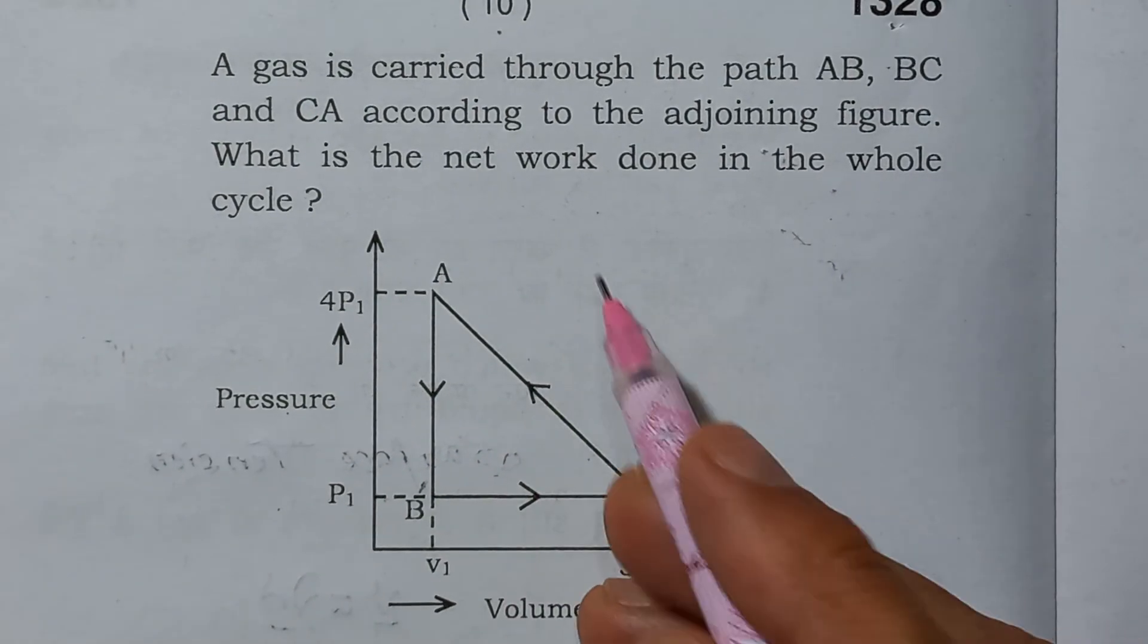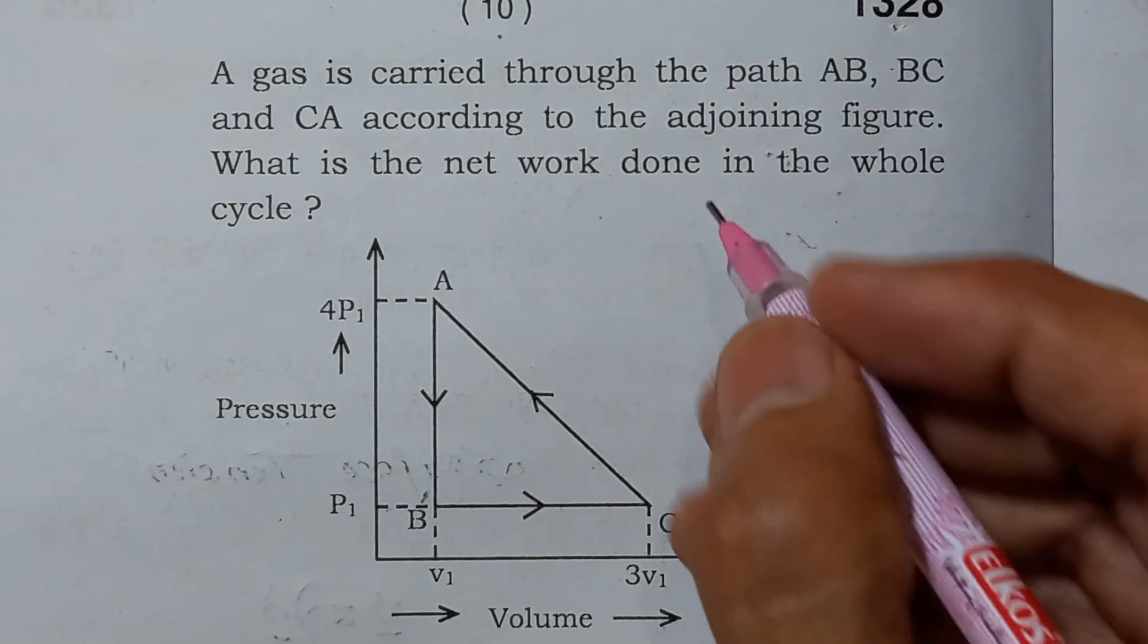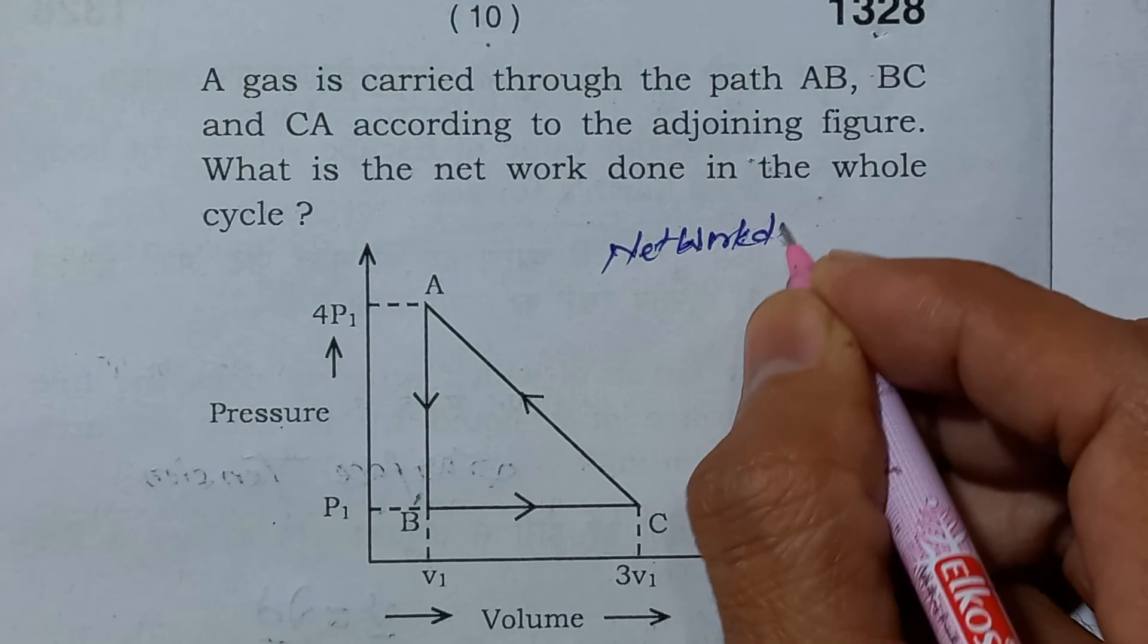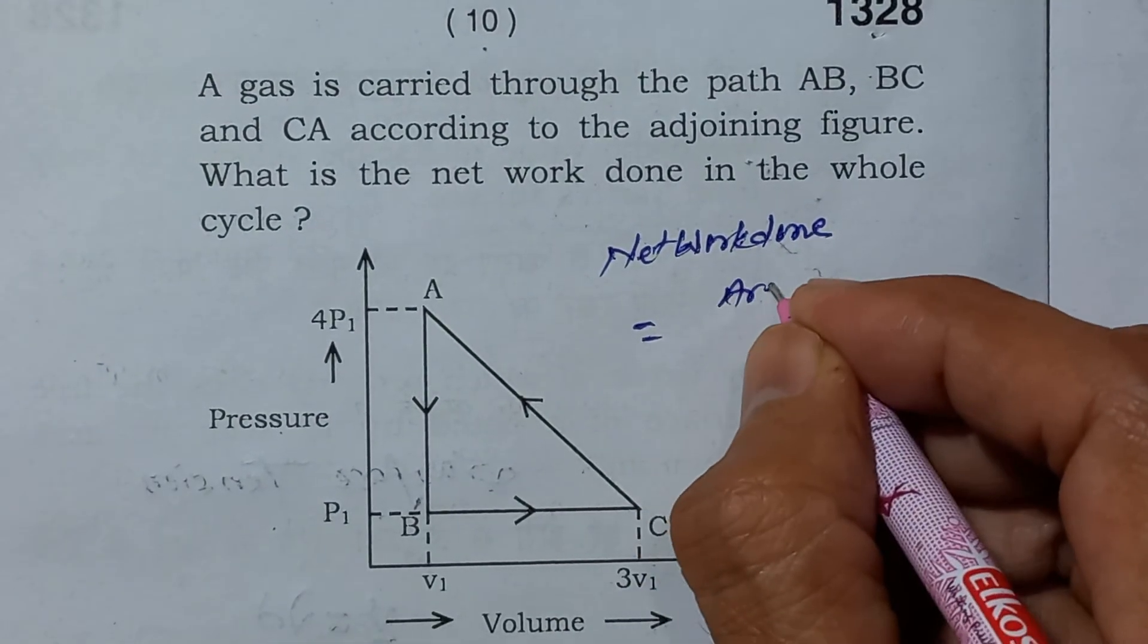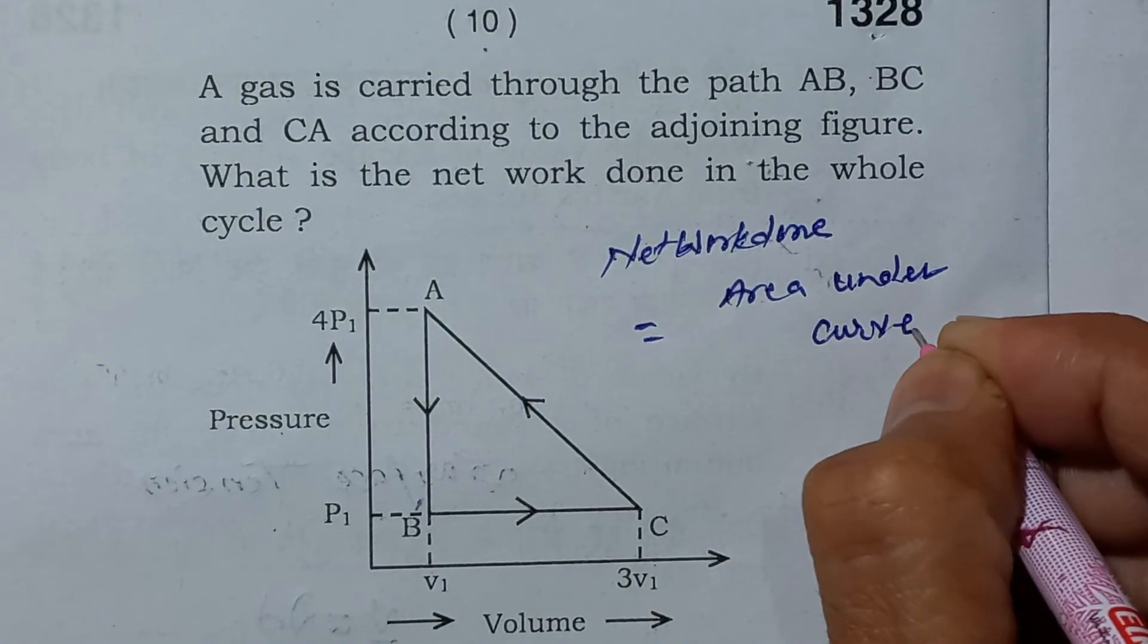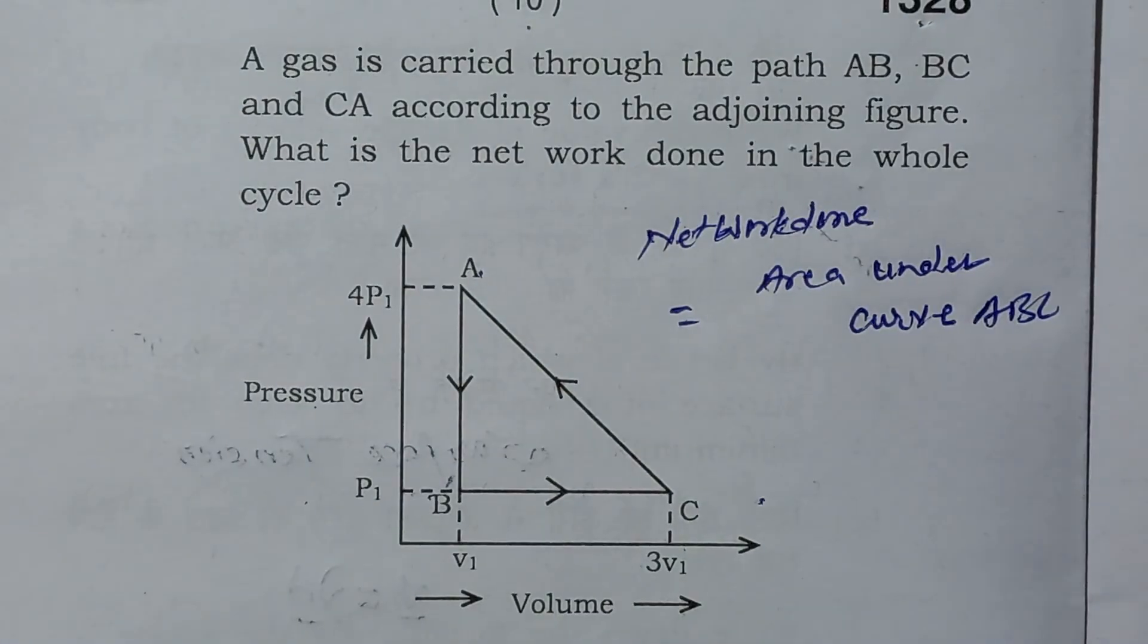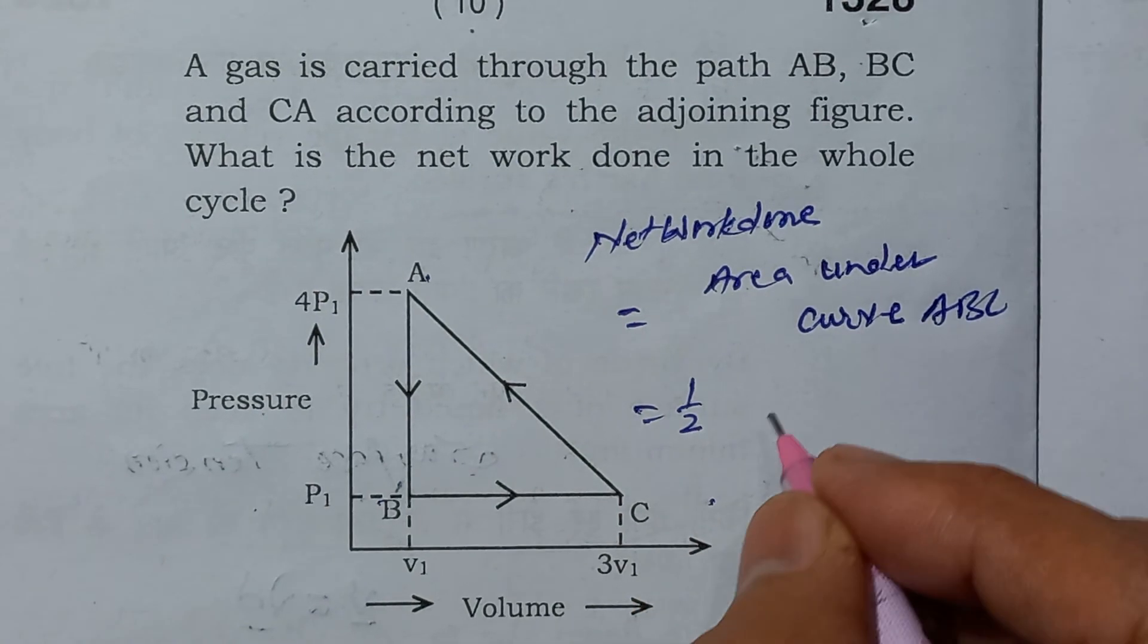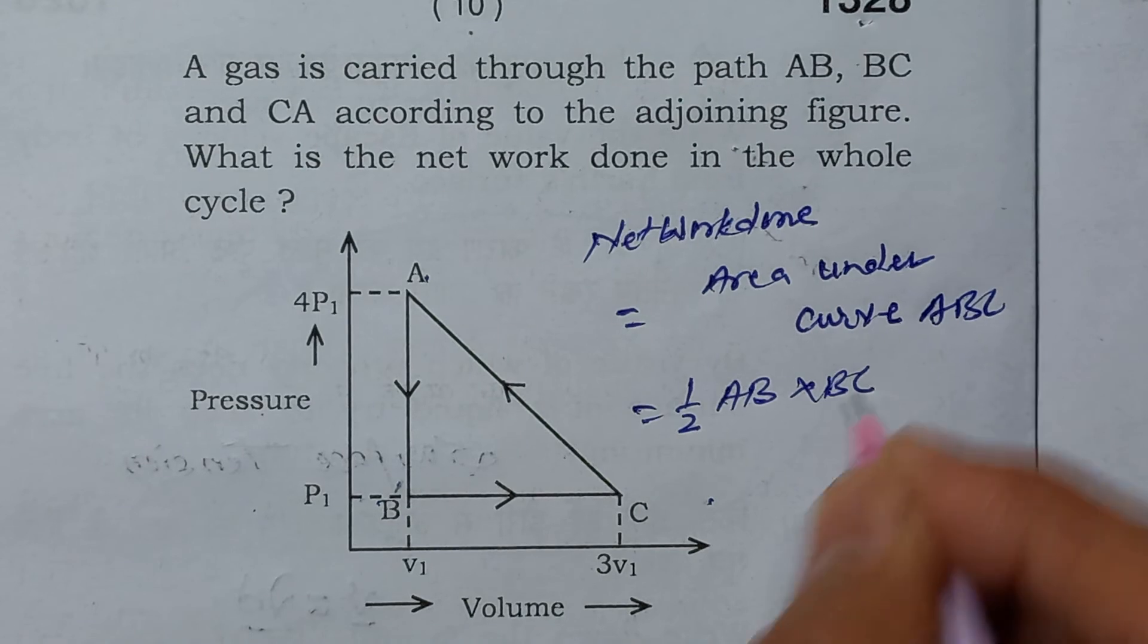What is net work done in the whole system? We know that net work done is the area under A, B, C, or area of this triangle will be half base into height, AB into BC.